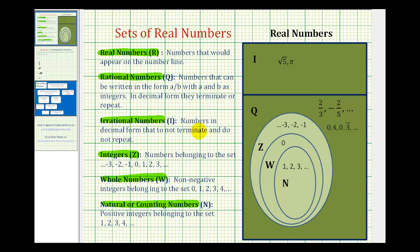Irrational numbers are numbers that in decimal form do not terminate and do not repeat. For example, the square root of five would be some non-terminating, non-repeating decimal. And of course, so is pi.